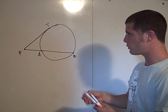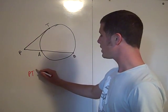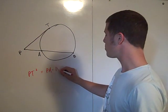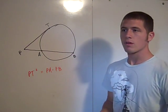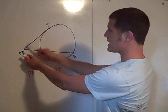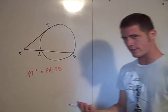Well what we want to show true is that this time PT squared equals PA times PB. It's very similar to the power of a point part one. This time it's just PT times PT equals PA times PB, so you can see where the similarity lies.